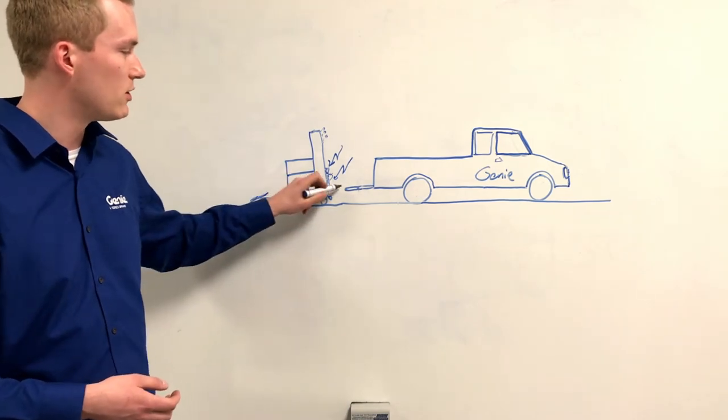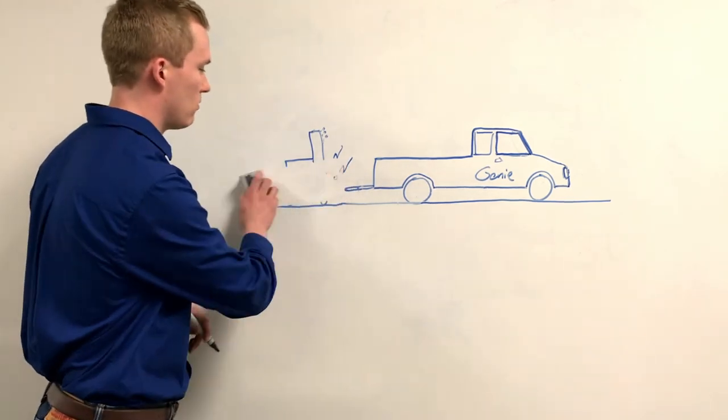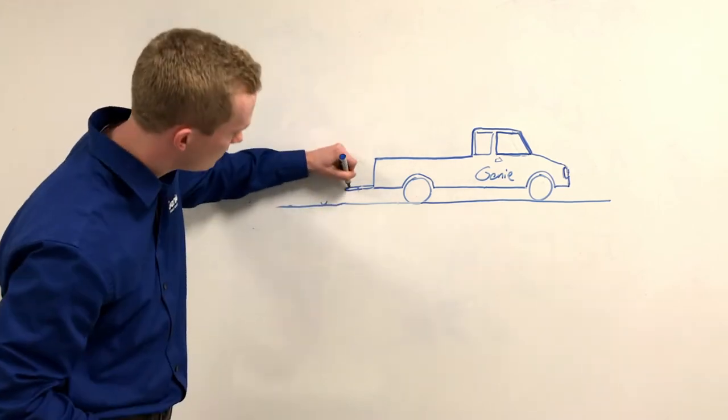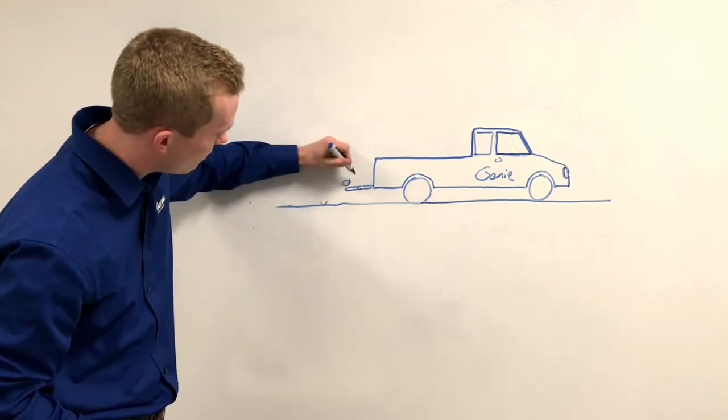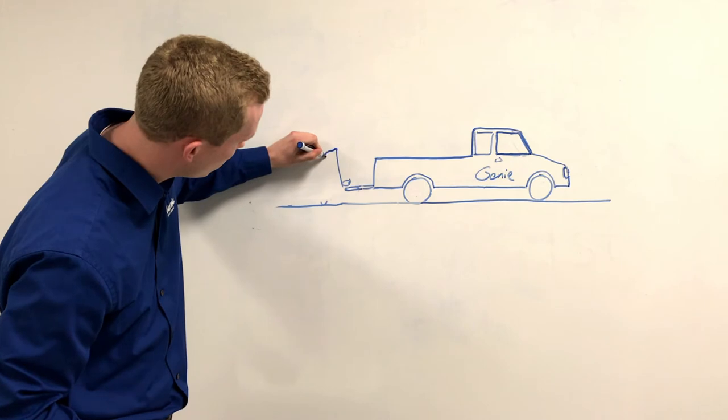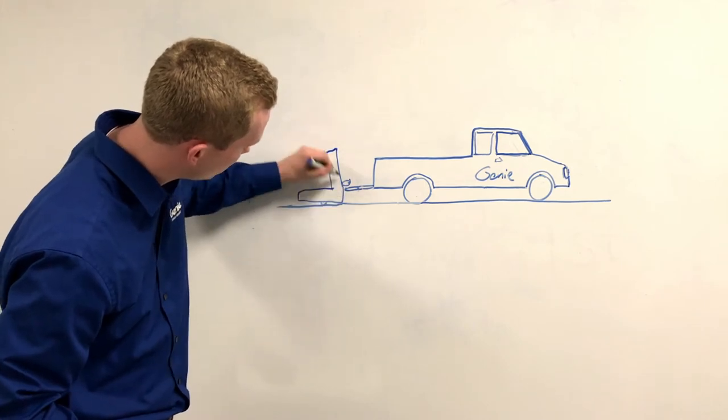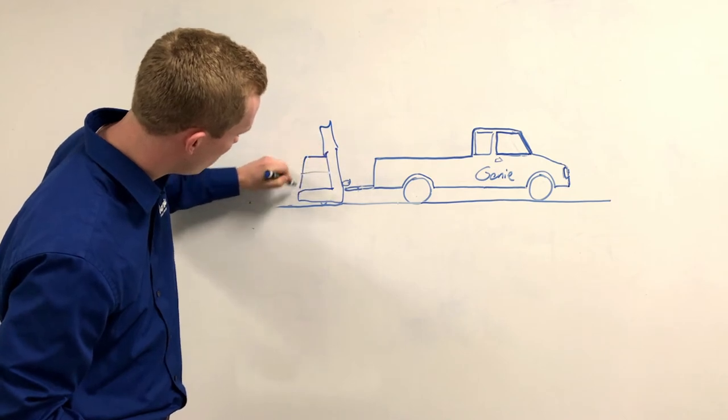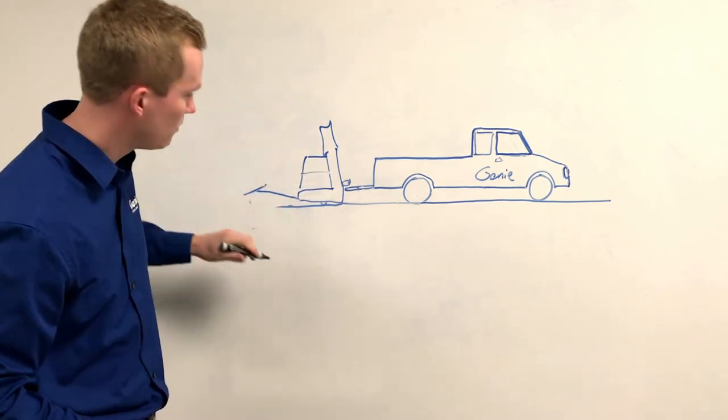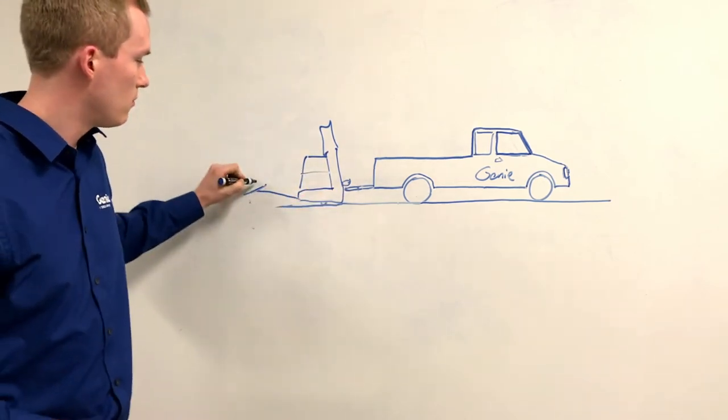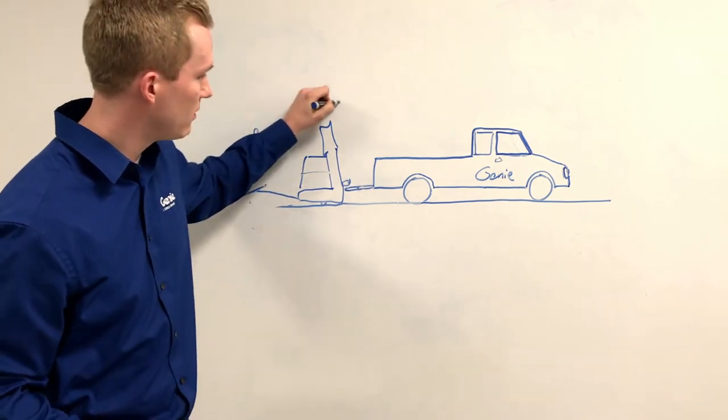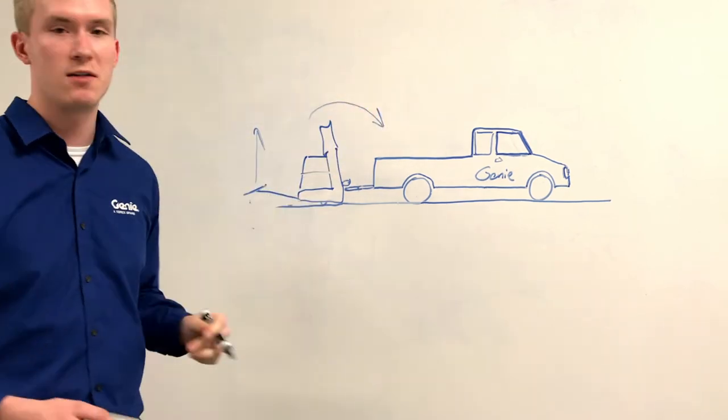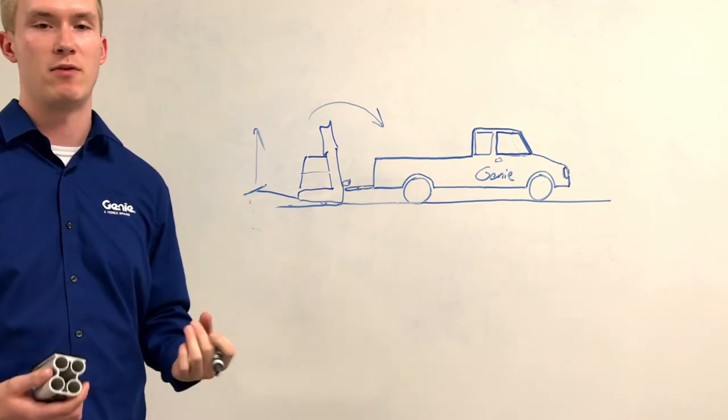Once we've got the machine backed up to the pickup truck with the pivot bar resting close to the tailgate and the T-handle pulled out, we're ready to pull up on the T-handle, which is going to pivot the aerial work platform onto its back around that pivot bar.